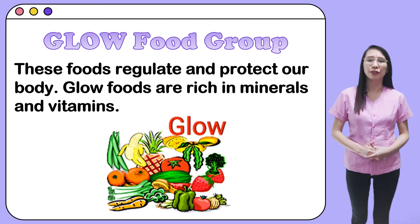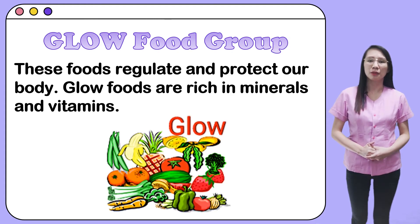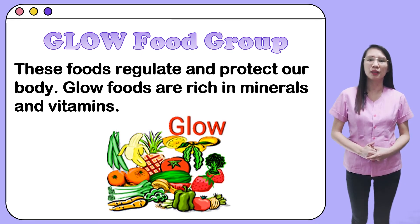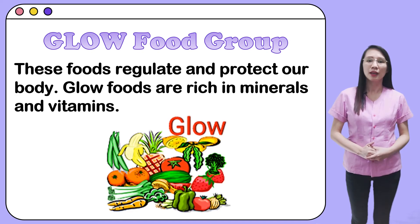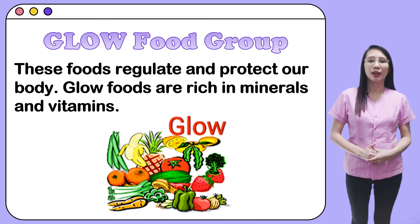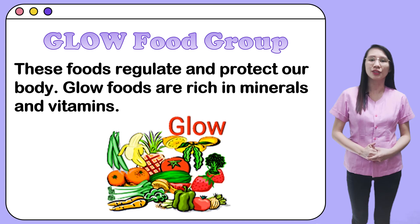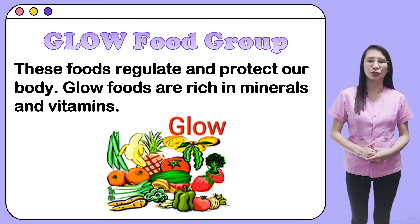Lastly, we have the GLOW Foods. These foods regulate and protect our body. GLOW Foods are rich in minerals and vitamins. Some examples of mineral-rich foods are milk, cheese, fish, shellfish, banana, apple, orange, green peas, beans, lettuce, and spinach. Vitamin-rich foods include green leaf vegetables, yellow fruits and vegetables, and citrus fruits.